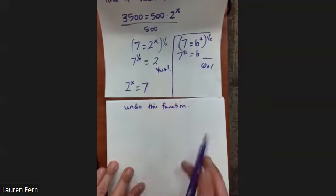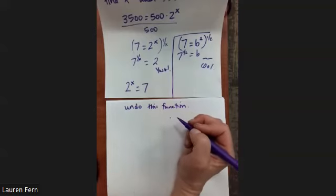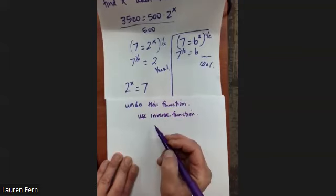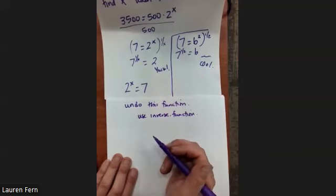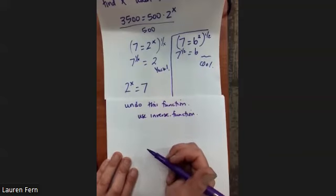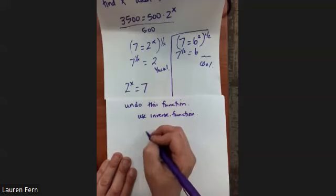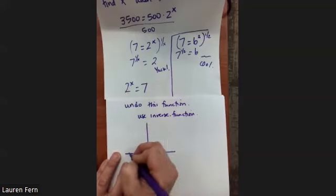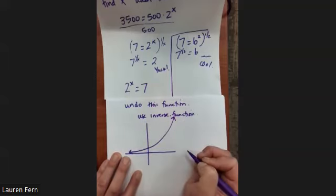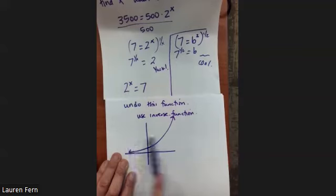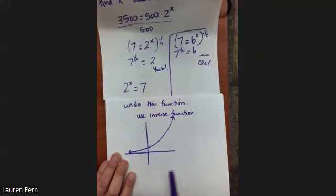To undo this function, we use the inverse function. Our goal is first to ask: do exponential functions have inverses? Exponential functions do have inverses, because we know the general graph passes the vertical line test, and it's one-to-one because it passes the horizontal line test. Once you have a one-to-one function, you know you have an inverse.